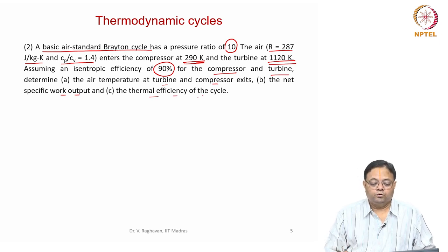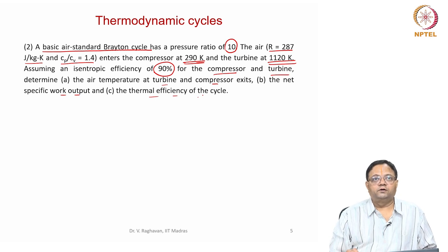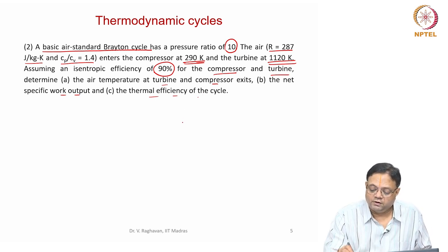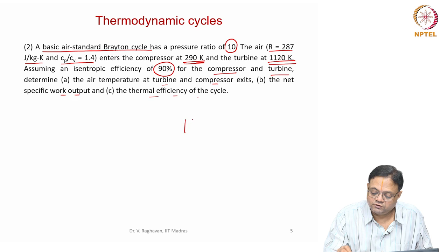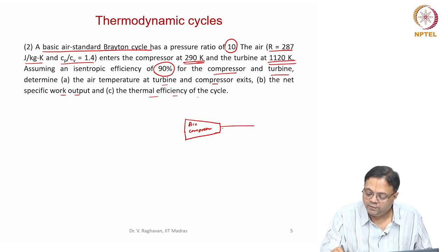Now, basic Brayton cycle — what are the components? When I say cycle, it is a closed cycle. The components are: first there will be a compressor — an air compressor — which is actually driven by a turbine, a gas turbine.